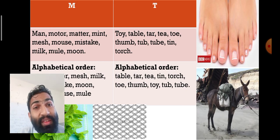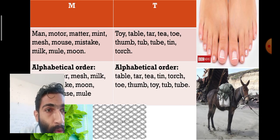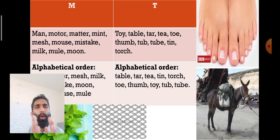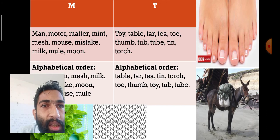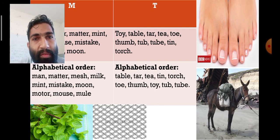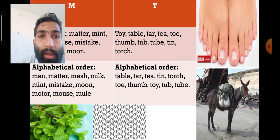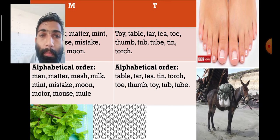T: toy, table, tar, tea, toe, thumb, tub, tube, tin, torch. In alphabetical order: man, matter, mesh, milk, mint, mistake, moon, motor, mouse, mule. Then: table, tar, tea, tin, torch, toe, thumb, toy, tub, tube.